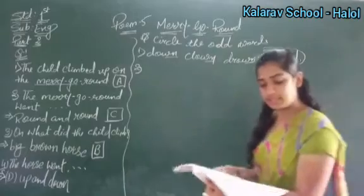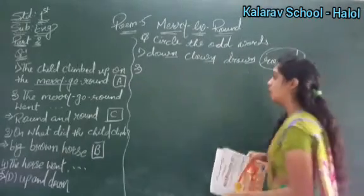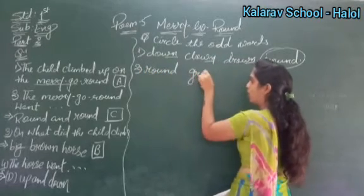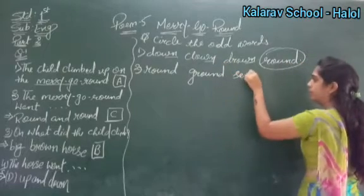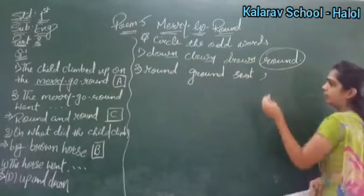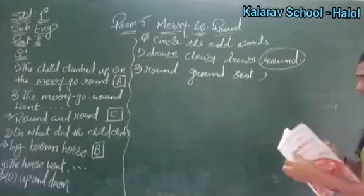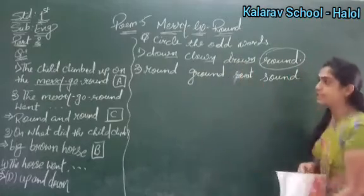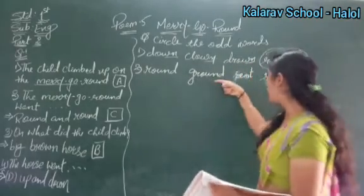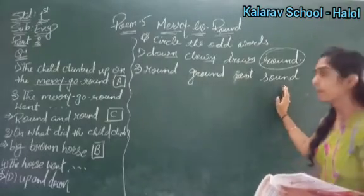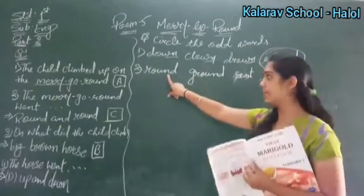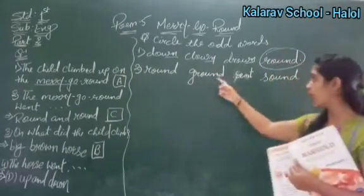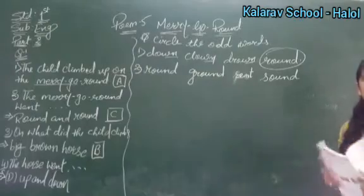Next, second set: round, ground, and sound. These three end with '-ound' and their pronunciation is the same — round, ground, sound. So the odd word in this set is to be identified by the word that doesn't share the same ending sound as the others.